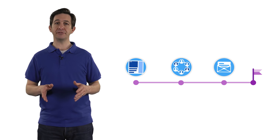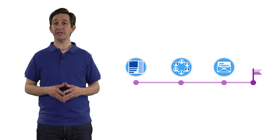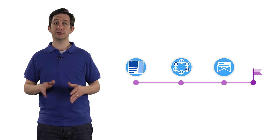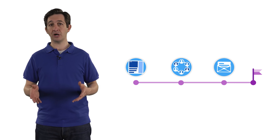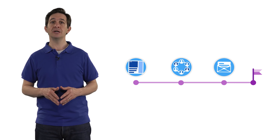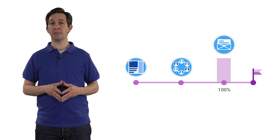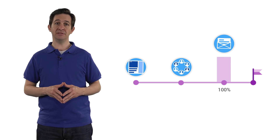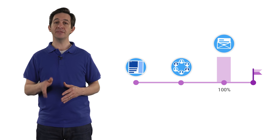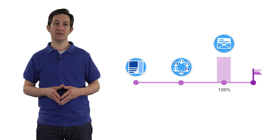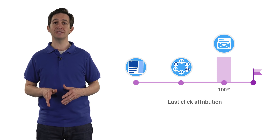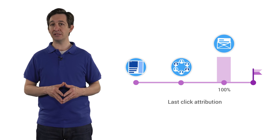By default, Google Analytics will attribute all of the credit, or e-commerce revenue, to the last marketing activity. In this case, the email campaign. This is called a last-click attribution model.